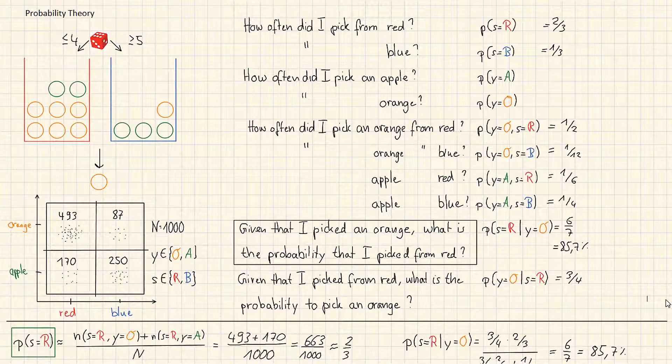So, this is a task that you could do by yourself. Just calculating the probability that s is equal to r given that I picked an apple now. We calculated this example with an orange. But feel free to calculate this with an apple.